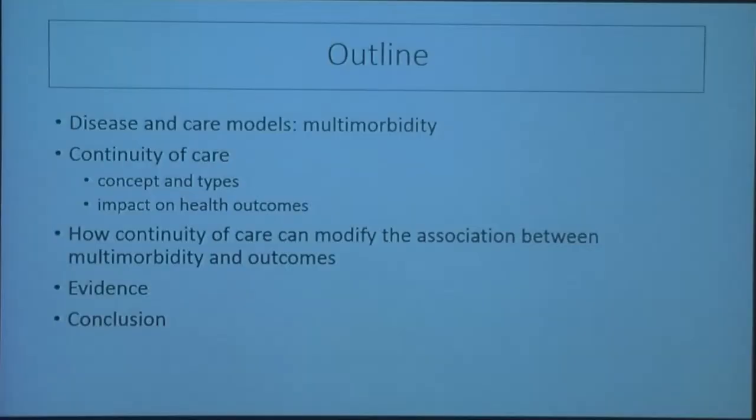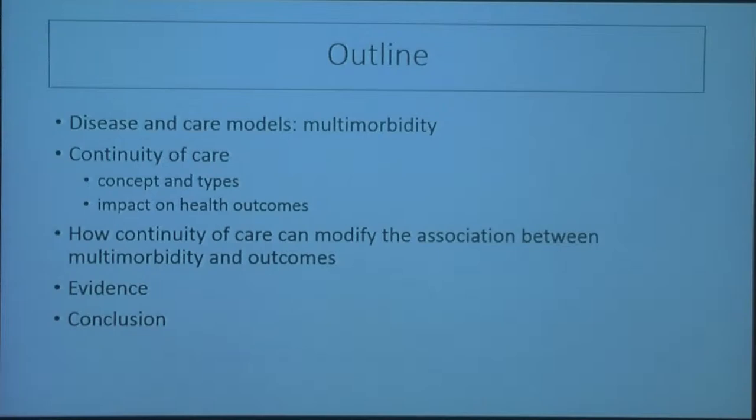What I would like to talk to you briefly about is reflect a bit on disease and care models, and particularly as applied to multimorbidity. Introduce the notion of continuity of care, the concepts and types, and what's the evidence for the impact on health outcomes. How continuity of care can be expected or hypothesized to modify the association between multimorbidity and outcomes, present you with the evidence and conclude with some recommendations.